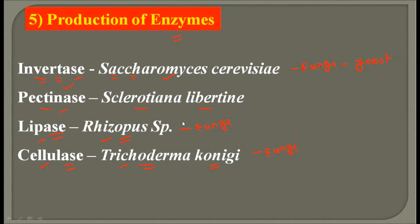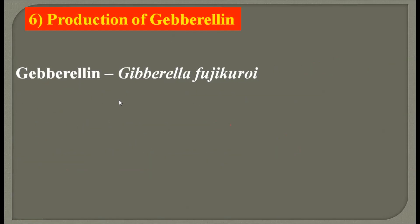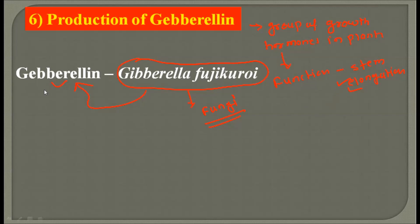The next application of microbes in industrial production is the production of gibberellins. Gibberellins are a group of growth hormones in plants, and their primary function is stem elongation. This gibberellin is produced by Gibberella fujikuroi, a microbe which belongs to fungi, which helps plants in stem elongation. There are many applications of the gibberellin hormone in the plant kingdom.